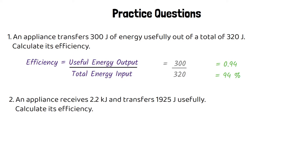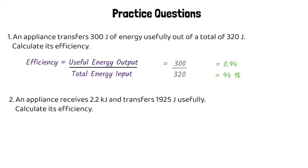For the second question we need to convert our units. Our useful energy output is in joules but our total energy input is 2.2 kilojoules, so we convert that to 2200 joules. We then do 1,925 over 2200, giving an efficiency of 0.88, or 88% as a percentage.